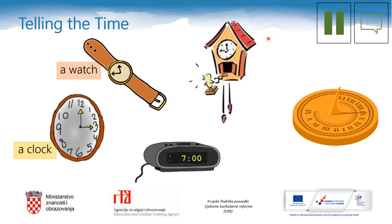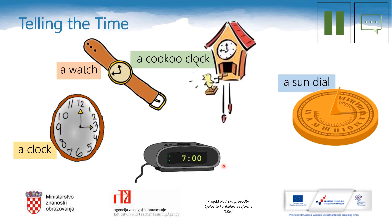And what about this one? My grandpa has one like this. This is called a cuckoo clock. Have you ever seen this one? We also use it to tell the time. This is a sundial. And the last one — I don't like it — it is an alarm clock.